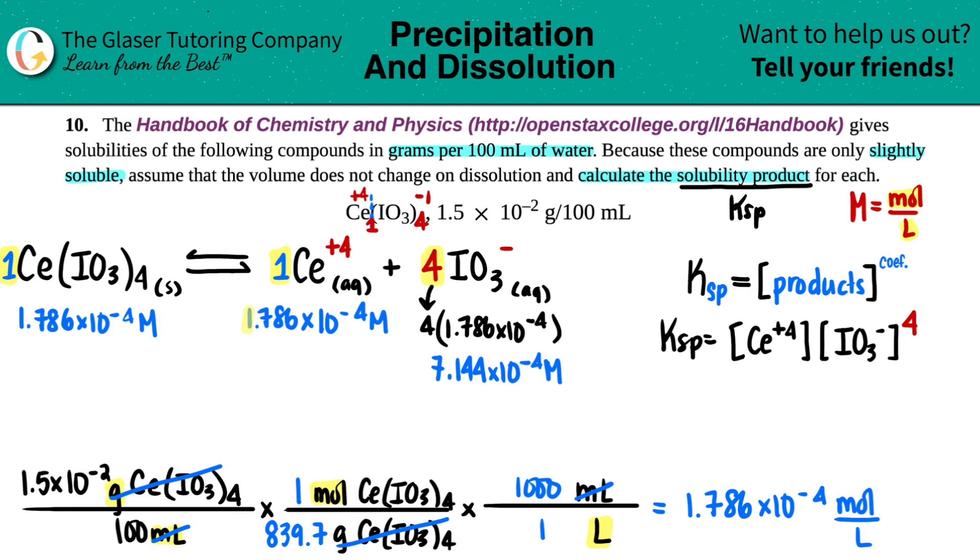Let's do it. KSP equals. We have the first one, we have the second one, and the second one is raised to the fourth because that's what the equation states. So we have 1.786 times 10 to the negative fourth and then we have 7.144 times 10 to the negative fourth.